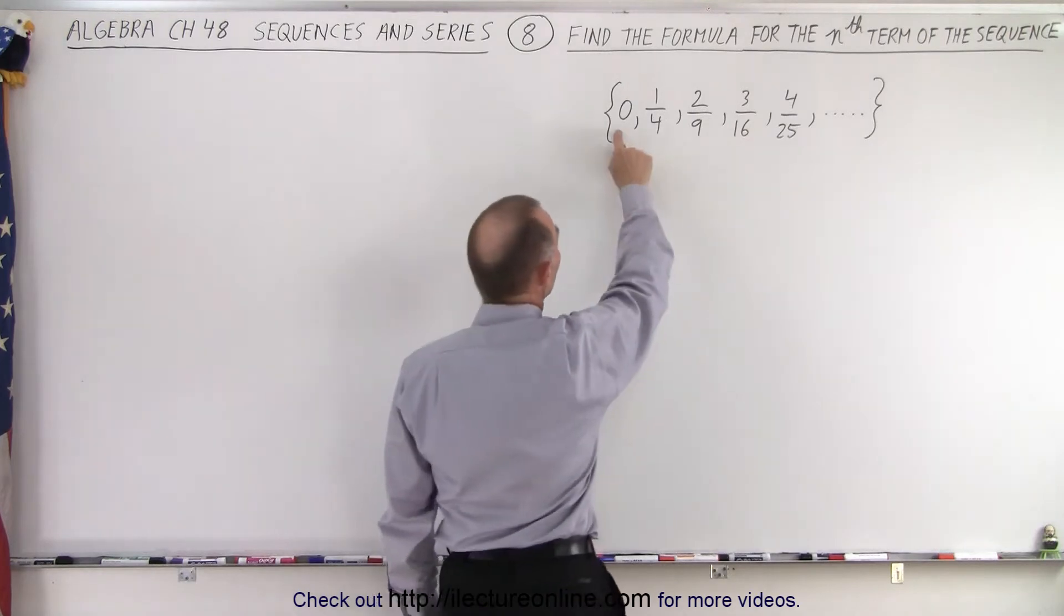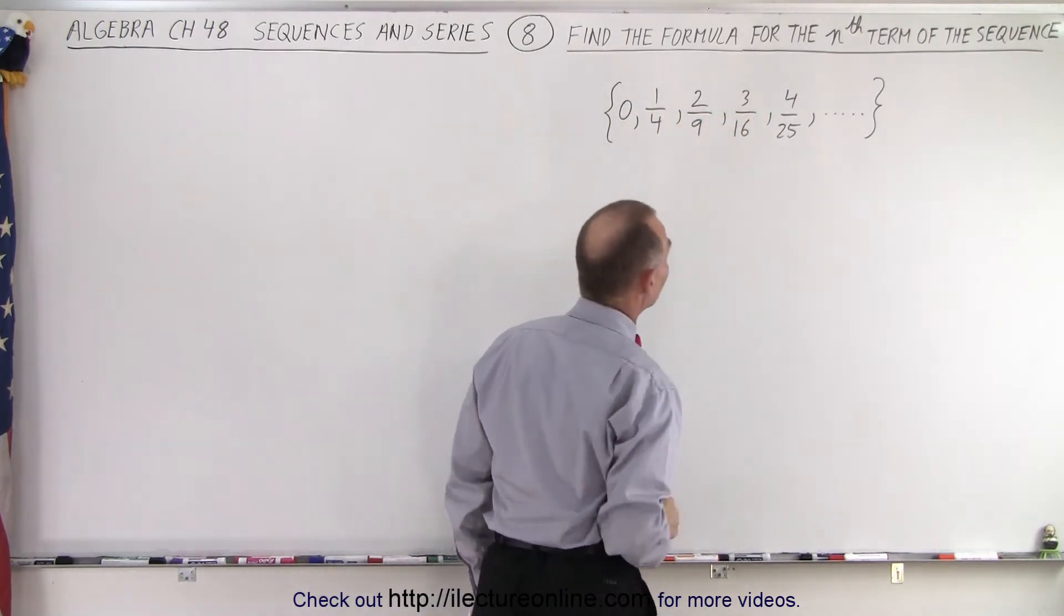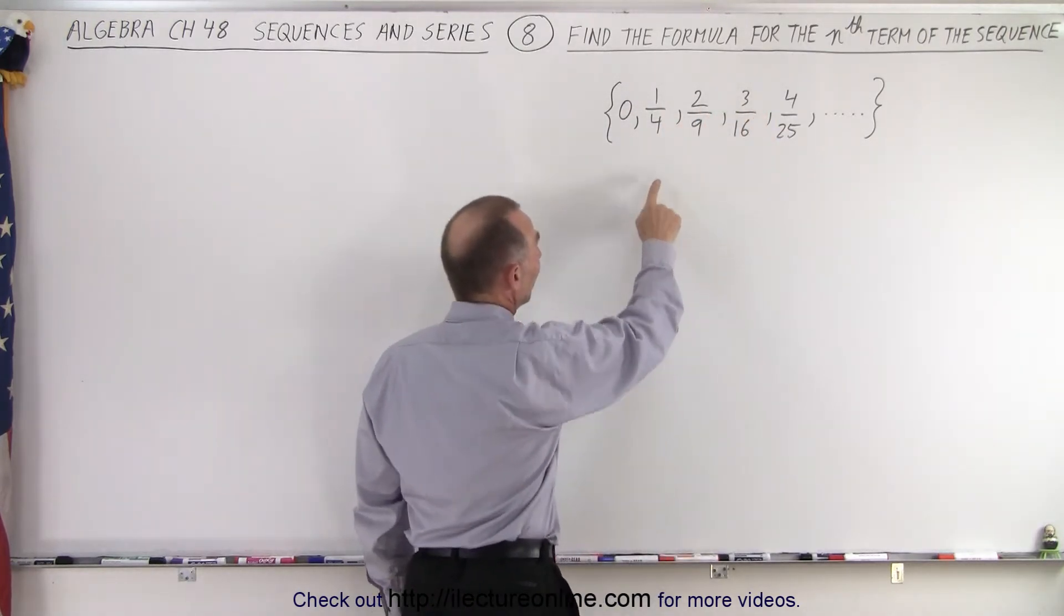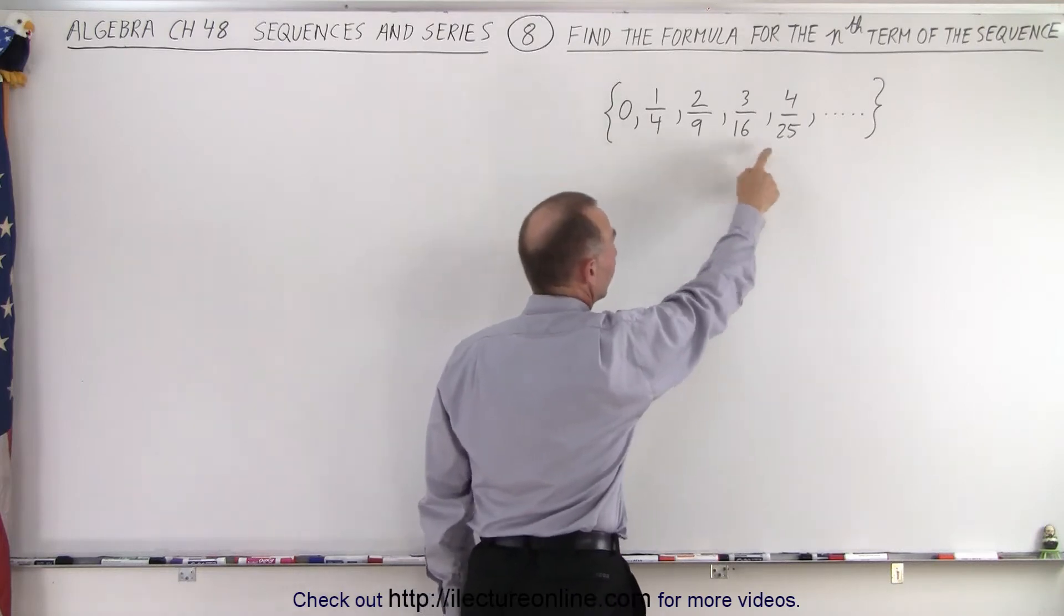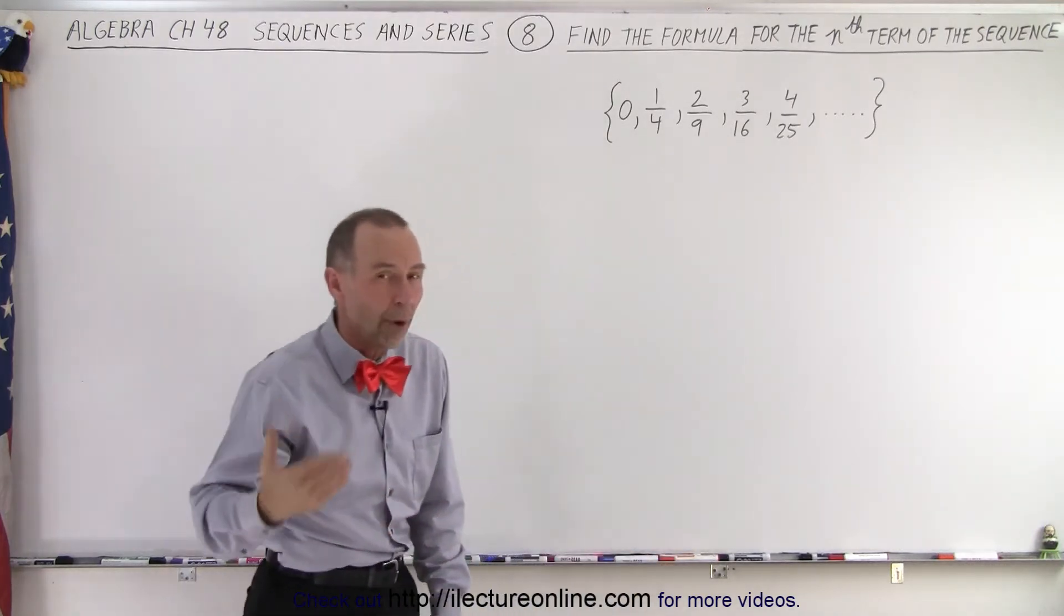Notice that in the numerator we have 0, 1, 2, 3, 4, 5, and so forth. In the denominator, we have 4, 9, 16, 25, that looks like the square of an integer.